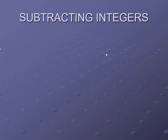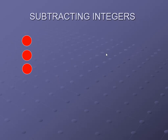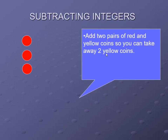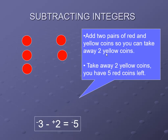Work this problem: minus 3 minus plus 2. Start with 3 red coins representing minus 3. Add 2 pairs of red and yellow coins so you can take away 2 yellow coins. Take away 2 yellow coins — you have 5 red coins left. So the number equation is minus 3 minus plus 2 equals minus 5.